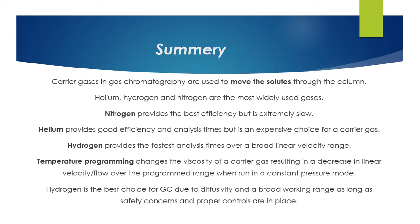In summary, carrier gases in gas chromatography are used to move solutes through the column. Helium, hydrogen, and nitrogen are the most widely used gases. Nitrogen provides the best efficiency but is extremely slow. Helium provides good efficiency and analysis times but is an expensive choice. Hydrogen provides the fastest analysis times over a broad linear velocity range. Temperature programming changes carrier gas viscosity, resulting in a decrease in linear velocity when run in constant pressure mode. Hydrogen is the best choice for GC due to its diffusivity and broad working range, as long as safety concerns and proper controls are in place.